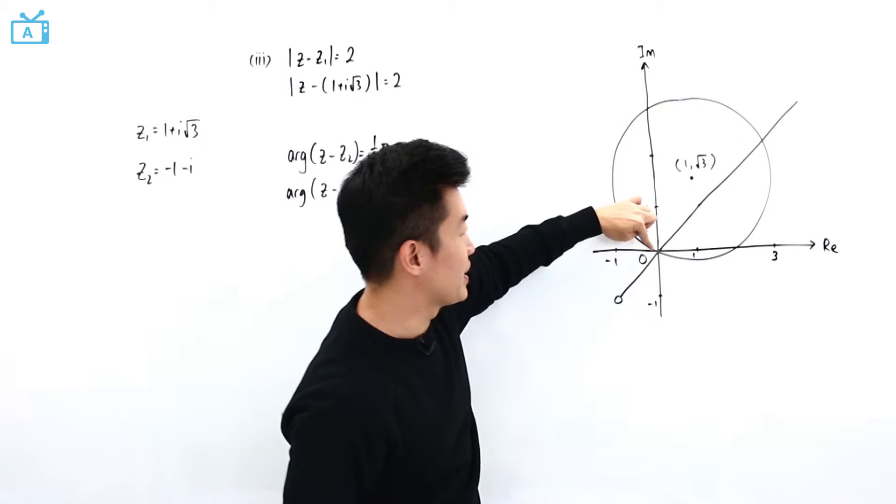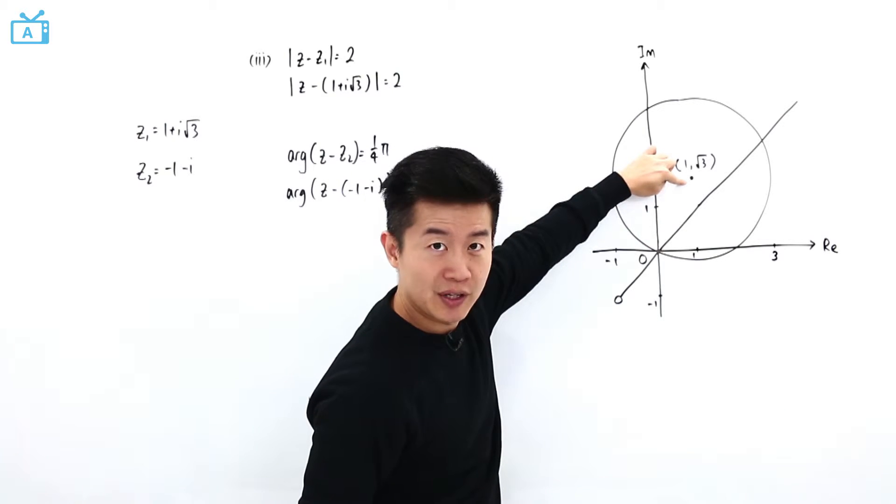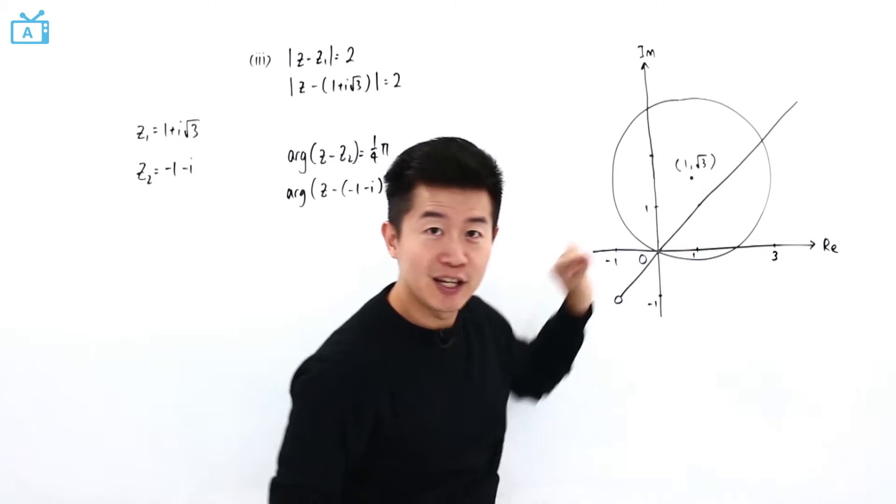Now if we observe from here to here, it is the radius. And from here to here, it is also the radius.